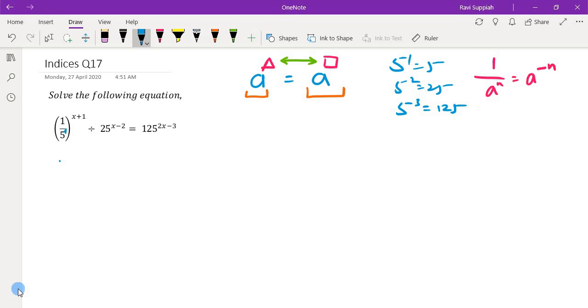I can rewrite it as 5 to the power of minus 1 to the power of x plus 1 divided by 25 is 5 squared to the power of x minus 2 and 1 over 5 is 5 cubed to the power of 2x minus 3.